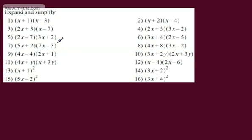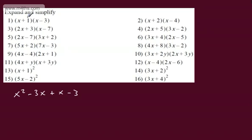Let's look at the first one: x plus 1 multiplied by x minus 3. Expanding this out, we're going to have x squared minus 3x plus 1x minus 3. First terms: x times x is x squared. Outer terms: x times minus 3 is minus 3x. Then we get plus 1x minus 3. Tidying this up, we end up with x squared minus 2x minus 3. And that's our answer.